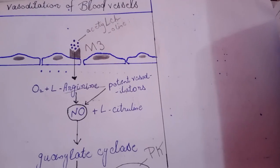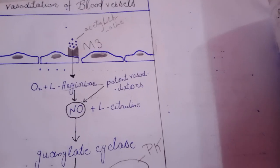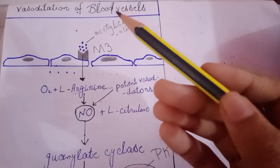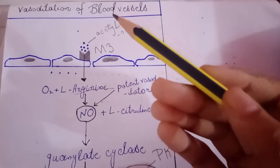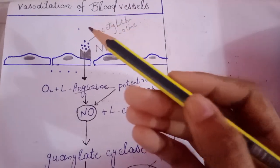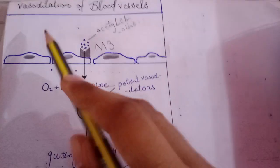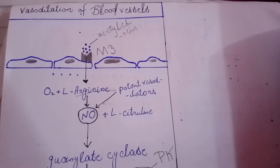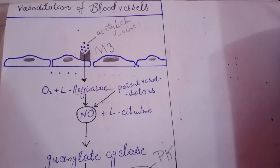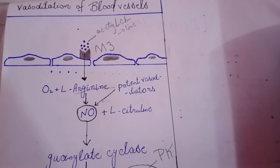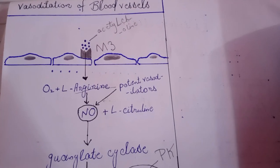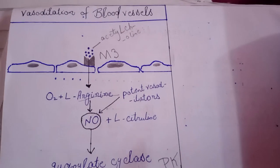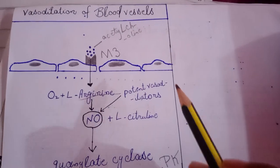Moving towards the mechanism of decrease in blood pressure — obviously, it occurs by vasodilation of blood vessels. Vasodilation is because of the relaxation of smooth muscles present in the blood vessels.